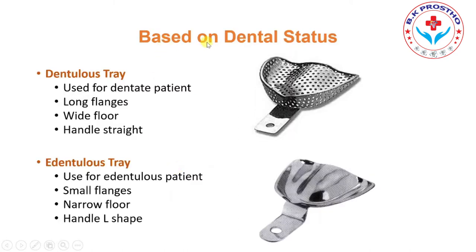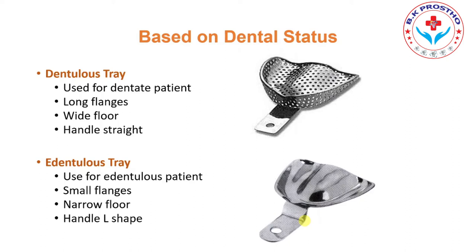Based upon dental status, there are dentate trays used for dentate and partially dentate patients, and edentulous trays used only for edentulous patients. Differences between the two: the dentate tray has a long flange, while the edentulous tray has a short flange. The dentate tray has a wide floor; the edentulous tray has a narrow floor. The dentate tray has a straight handle, while the edentulous tray has an L-shaped handle so that it will not interfere with lip movements during manipulation.